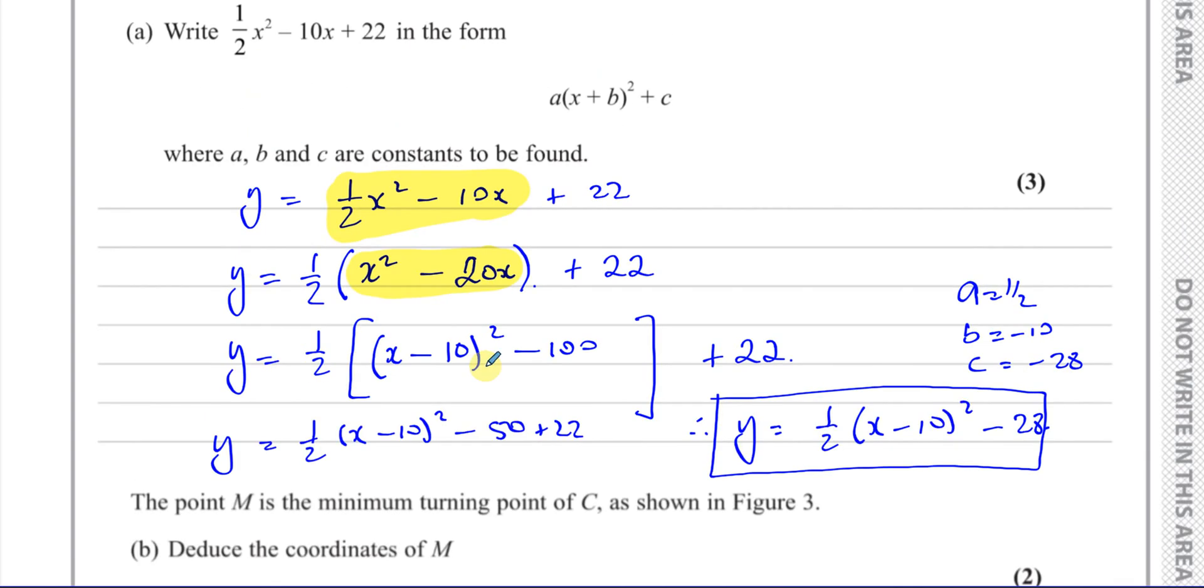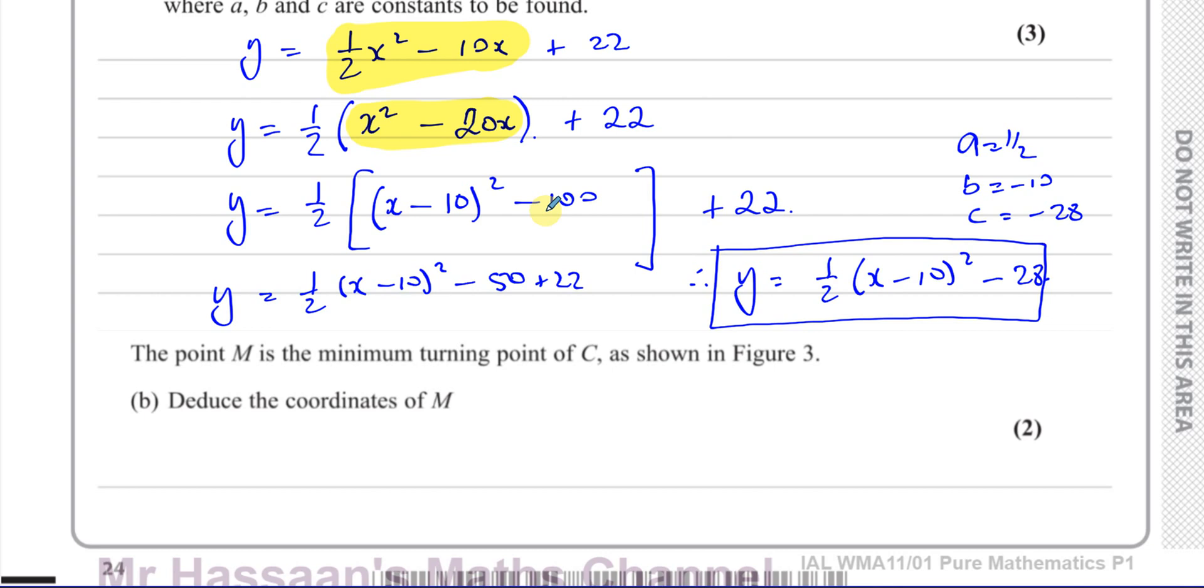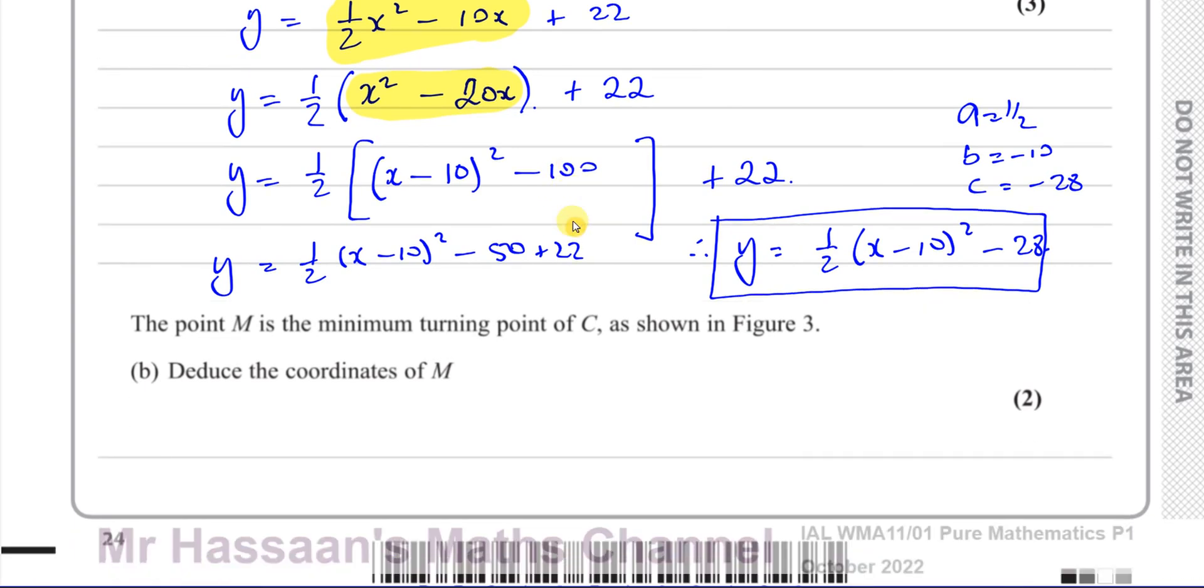Then it says the point m, which is this point here, is the minimum turning point of c as shown in figure 3. Deduce the coordinates of m. Now, we can very easily just use this form. And sometimes the question might even say, hence, using your answer to part a, deduce the coordinates of m, so you should know how to do this. When you've completed the square, you have put it in a form which you can quite easily write down the coordinates of the minimum or maximum point.